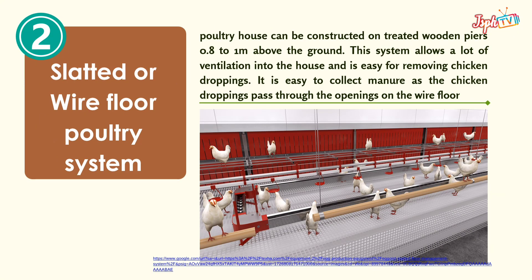Second, the slated or wire floor poultry system. The poultry house can be constructed on treated wooden piers 0.8 to 1 meter above the ground. This system allows a lot of ventilation into the house and is easy for removing chicken droppings. It is easy to collect manure as the chicken droppings pass through the openings on the floor.